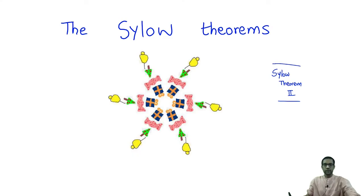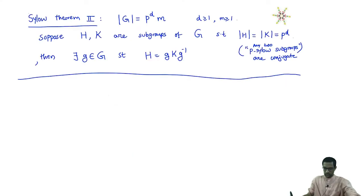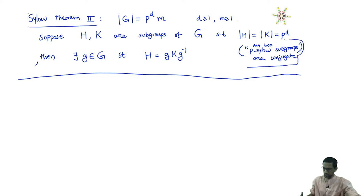Today, we will prove the second Sylow theorem. Here is a statement of Sylow theorem number 2. It says in words that any two P-Sylow subgroups of a group G are conjugates of each other.